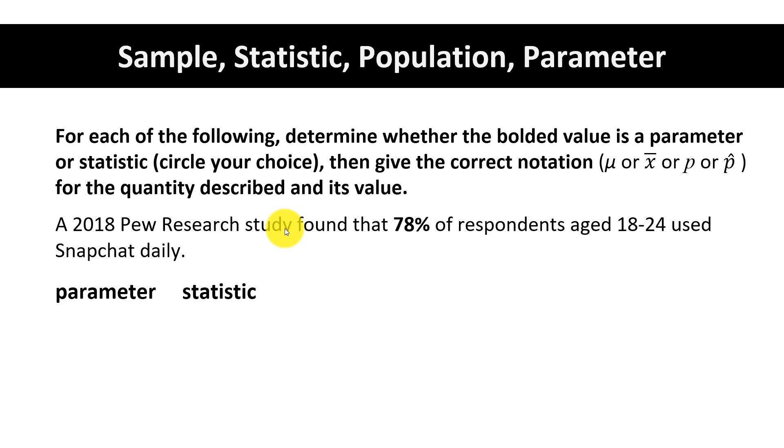We're not talking about everyone, we're talking about the respondents from this study. So 78% would be a statistic, and since it's a sample proportion, a sample percentage, we use p-hat for the symbol. We say p-hat equals 78% or 0.78.